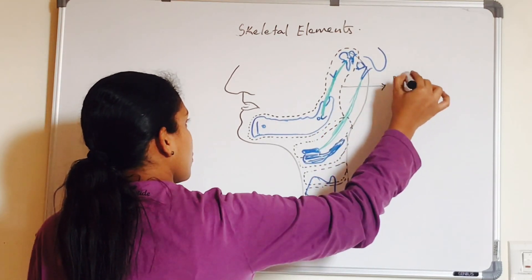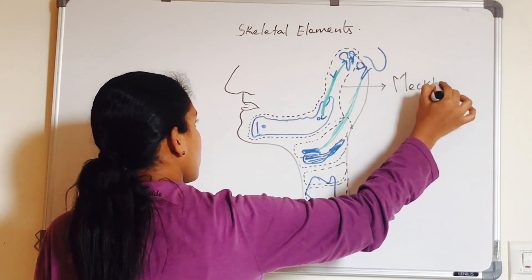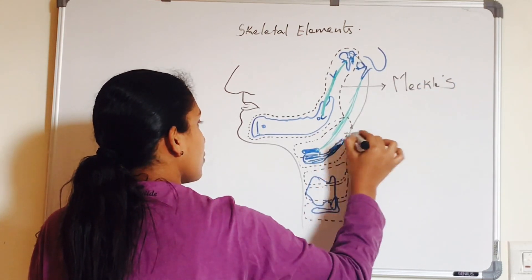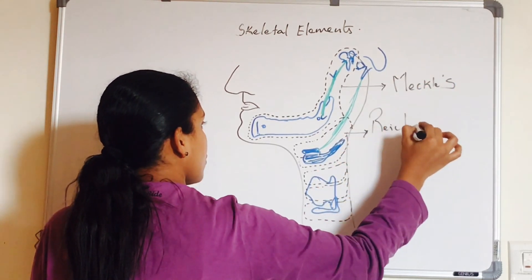So what is the name of first arch? It is called Meckel's cartilage, and the second arch is hyoid, that is Reichert's cartilage.